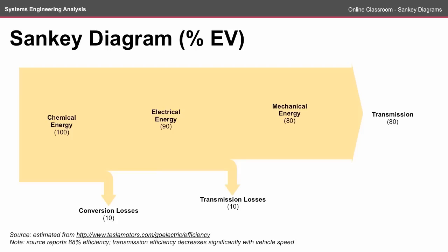Both of these diagrams could be extended in both directions. For example, to look at the amount of energy that's lost in transmitting the power from the grid to the batteries, or the amount of energy that's consumed in delivering the petrol to the vehicle.